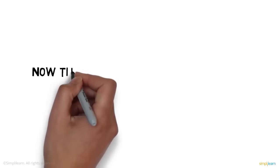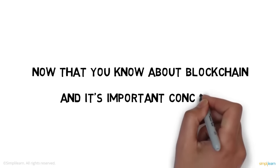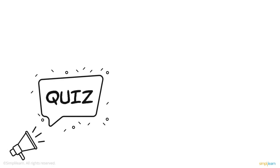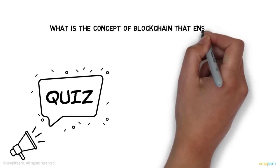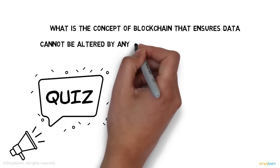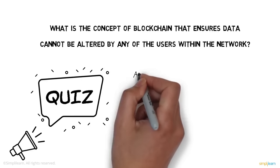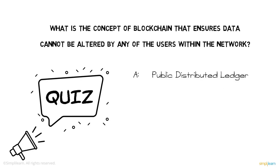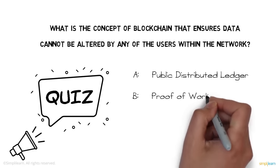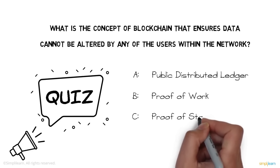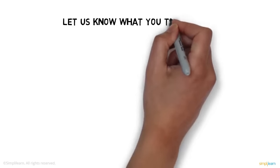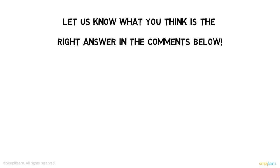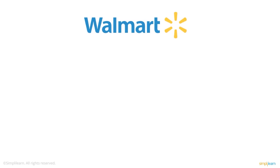Now that you know about blockchain and its important concepts, here's a small quiz: What is the concept of blockchain that ensures data cannot be altered by any user within the network? A) Public distributed ledger, B) Proof of work, C) Proof of stake, or D) Hash encryption. Let us know what you think is the right answer in the comments below.